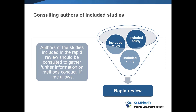When contacting authors, the information we ask about is typically related to whether the study is actually eligible — asking for clarification on different components of the eligibility criteria — or asking for data clarifications when a study is relevant but not reported in a way that allows us to abstract the data. Those are the two most common reasons to contact authors. Some review centers also contact authors to ask about risk of bias, such as whether allocation concealment was performed.